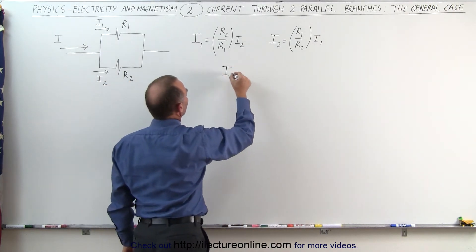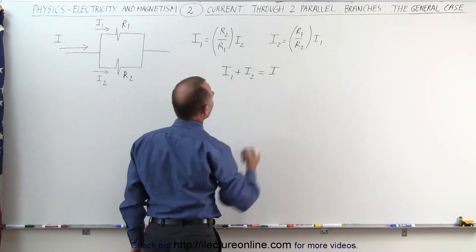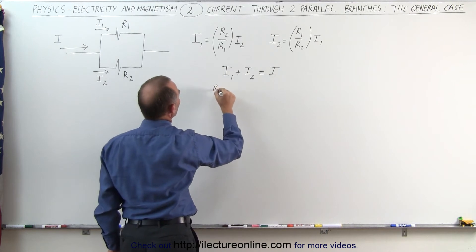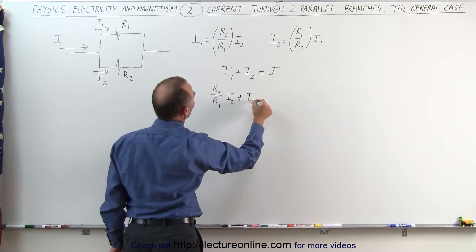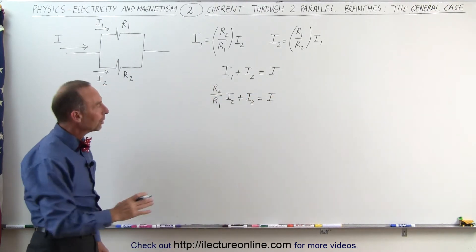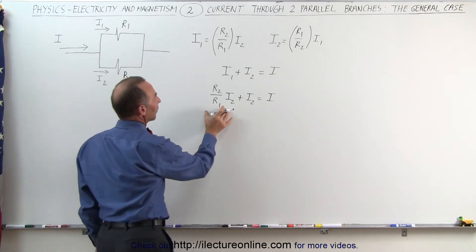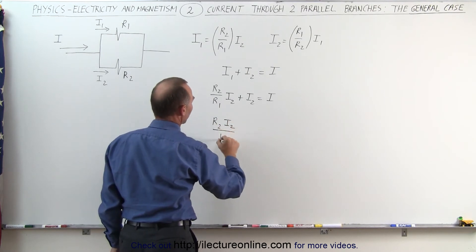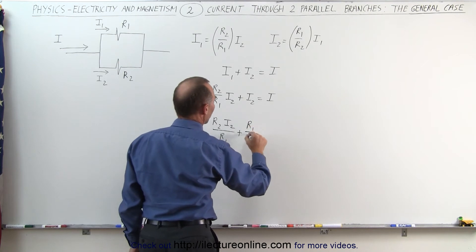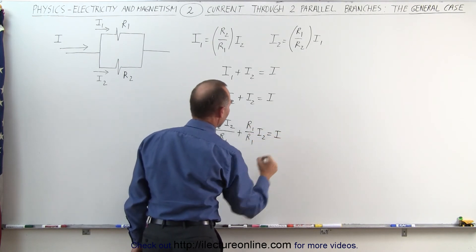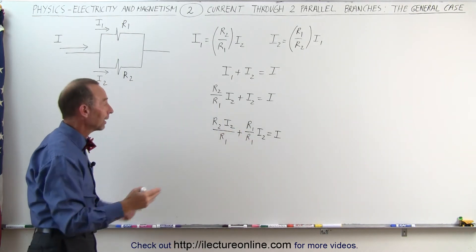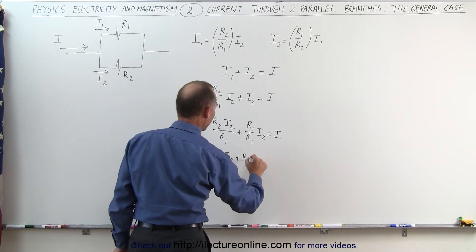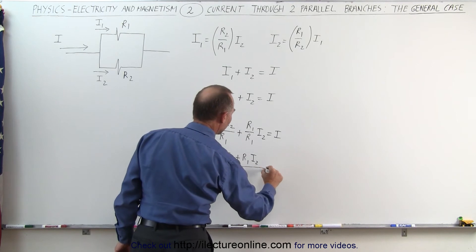If we then realize that I1 plus I2 will be equal to the total current I, and instead of writing I1, we can write I1 in terms of I2 using the values of the resistances, we can then say that R2 over R1 times I2 plus I2 is equal to the total current I. Now I want to add the left side together, but notice that I don't have a common denominator, so I have to multiply this times R1 over R1. So this becomes R2 times I2 over R1 plus R1 over R1 times I2 equals I.